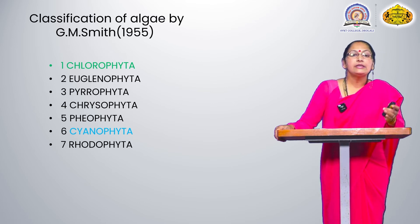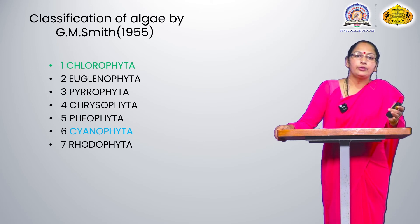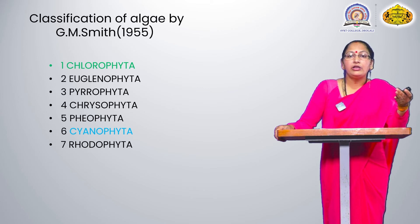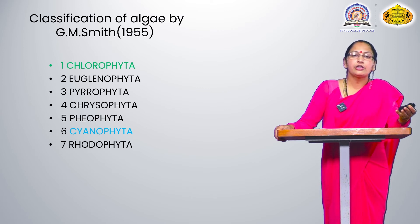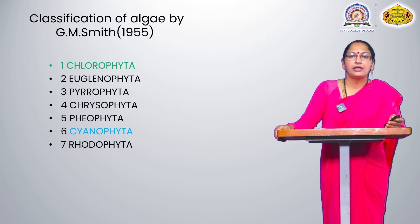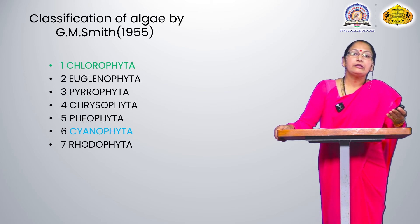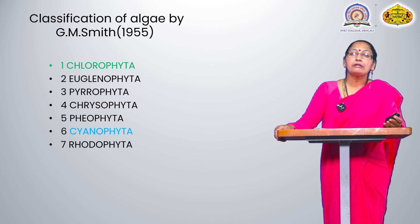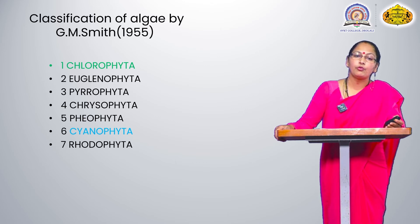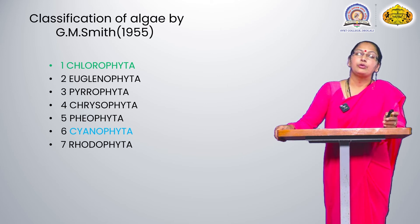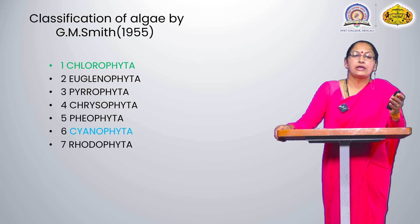G.M. Smith classified seven classes based on all points — reserved food material, chlorophyll pigments, etc. One by one we see: Chlorophyta, also called the green algae; Euglenophyta; Pyrrophyta; Chrysophyta; Phaeophyta; Cyanophyta; and Rhodophyta. All seven classes were derived by G.M. Smith and are in our syllabus.